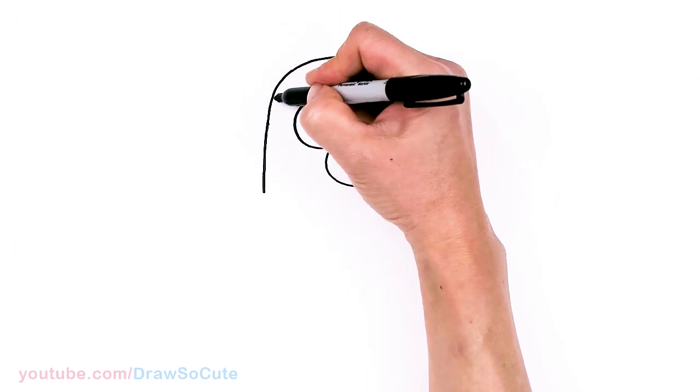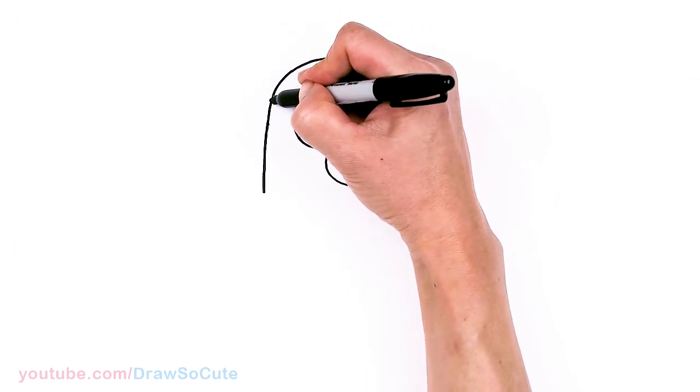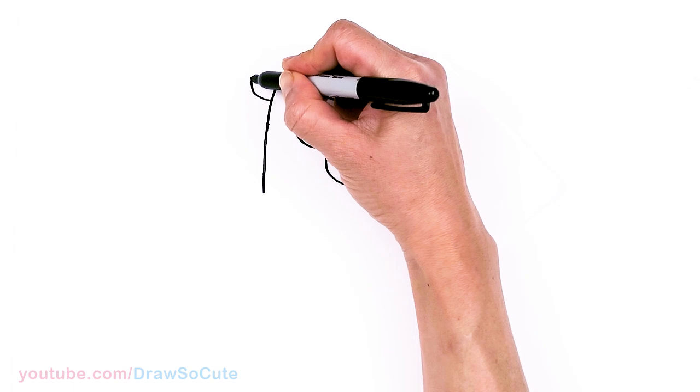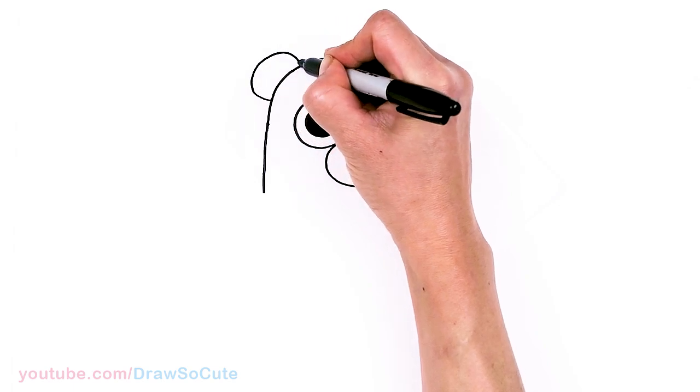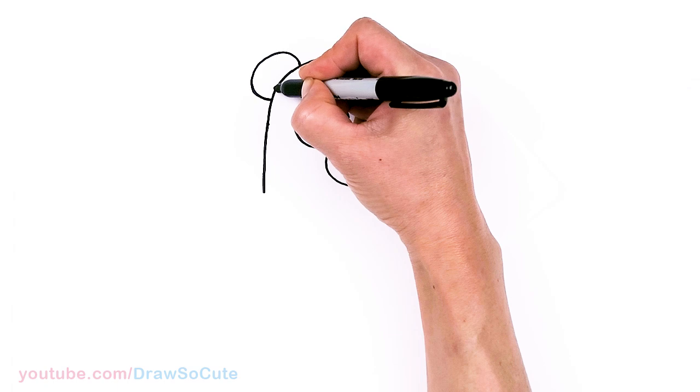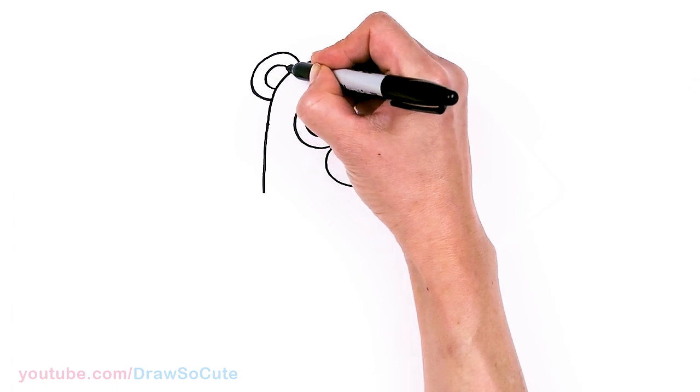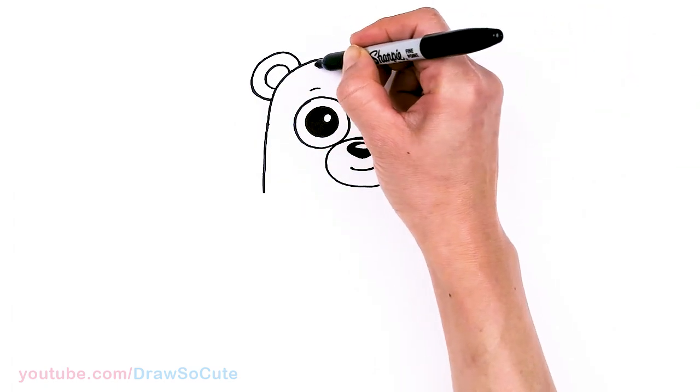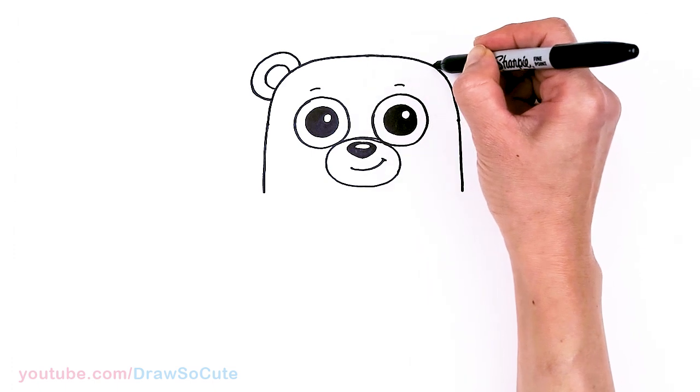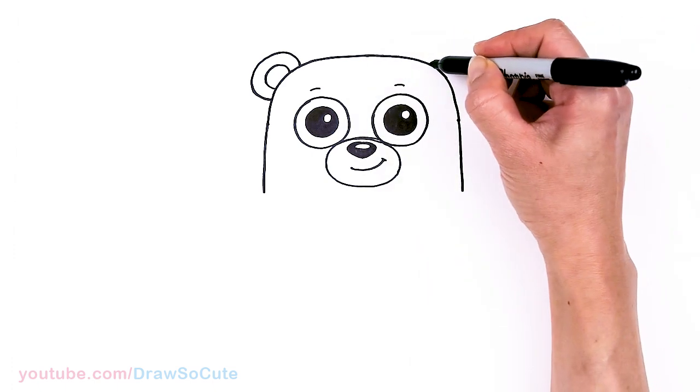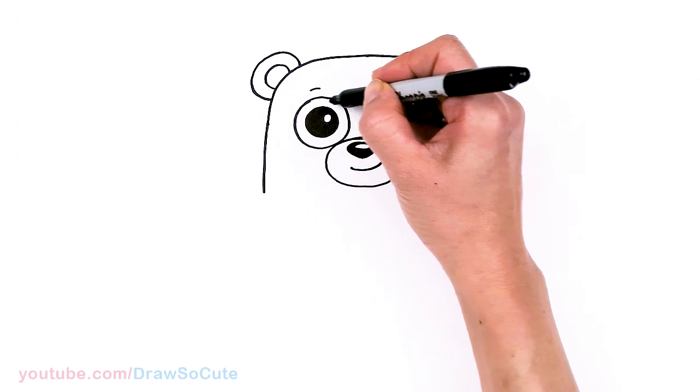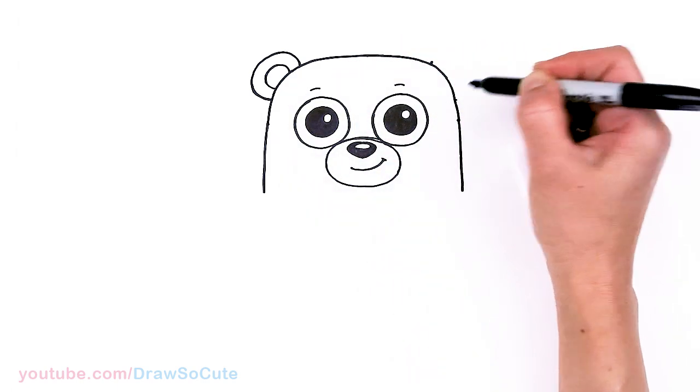So before I finish that, let's come back up and draw the ear. So in this corner part right here, I'm going to come right here. Draw a big curve. And then come in for the inside. And same thing on the other side. So about right here.